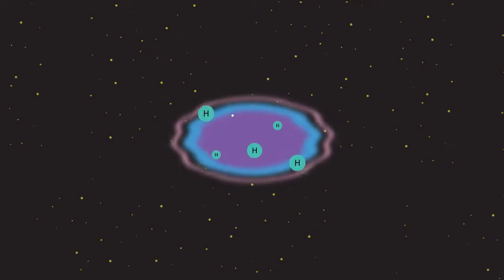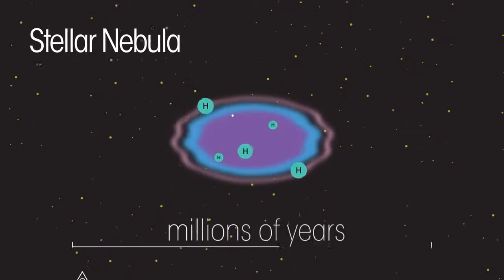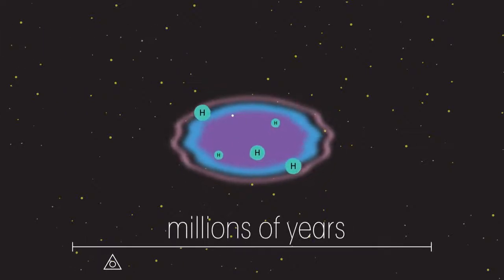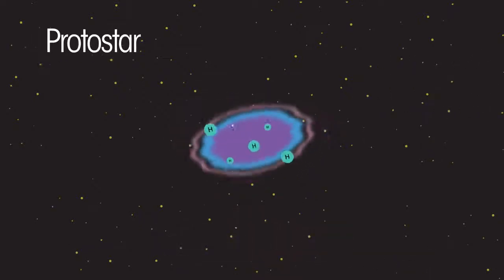All stars initially form from a cloud of dust and hydrogen gas. This cloud is called a stellar nebula. Gravity over millions of years causes the dust and gas to spiral together. The particles move faster and eventually reach temperatures of millions of degrees to form a protostar.